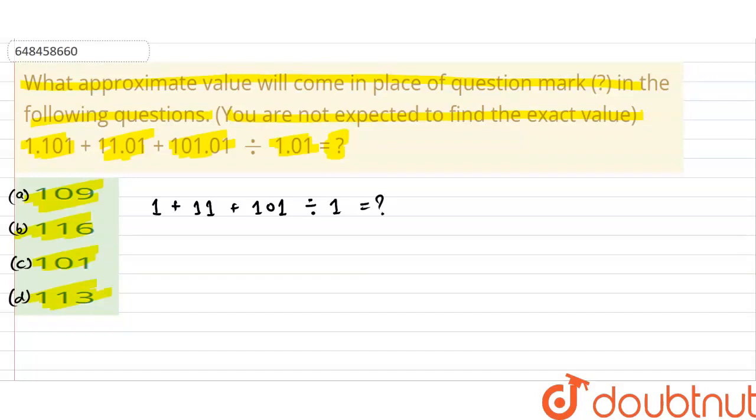Now let's solve it. So what do we get? 1 plus 11 plus 101 divided by 1, what is this? 101. When we add these, what will we get? We have 113 equals question mark. So what's the answer? 113, option D is correct.